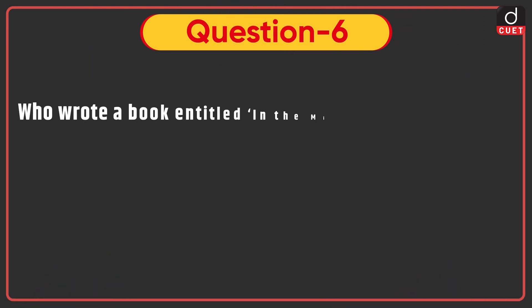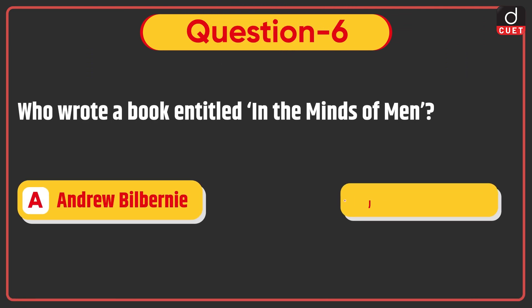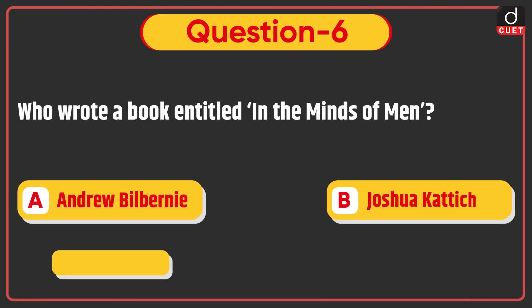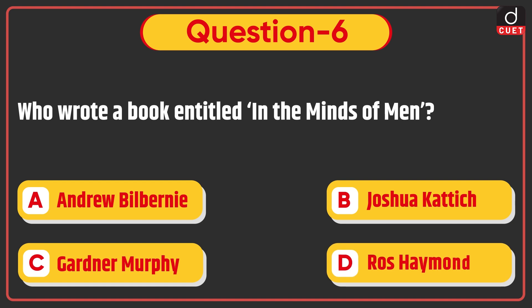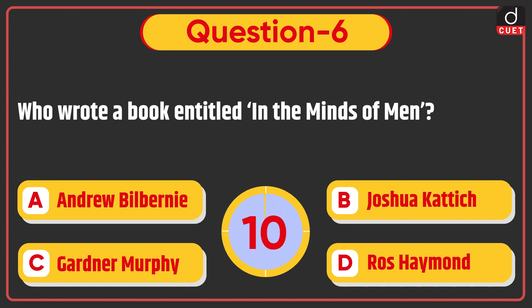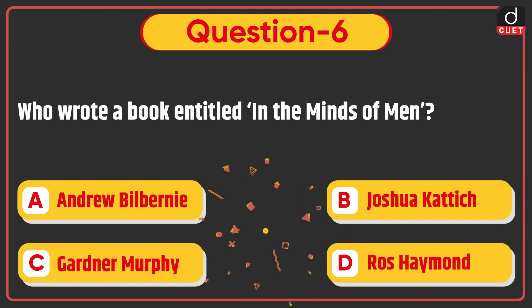Next question: Who wrote a book entitled 'In the Minds of Men'? — Andrew, Bilbrani, Joshua Cattich, Gardiner Murphy, or Ross Hammond? The correct answer is Option C, Gardiner Murphy.